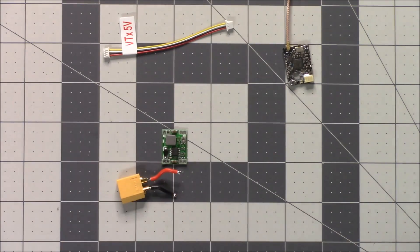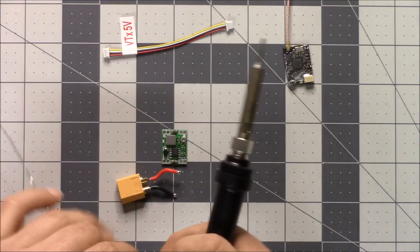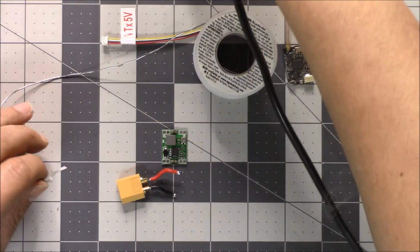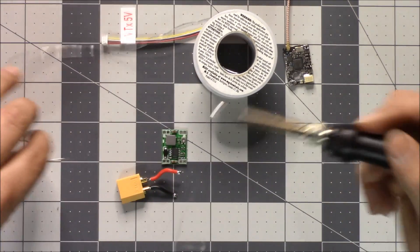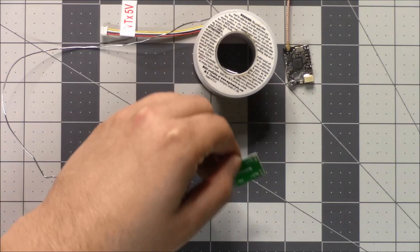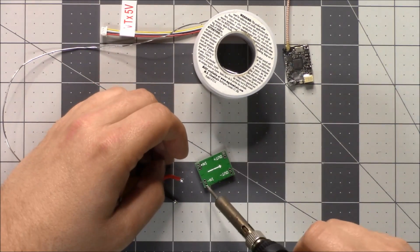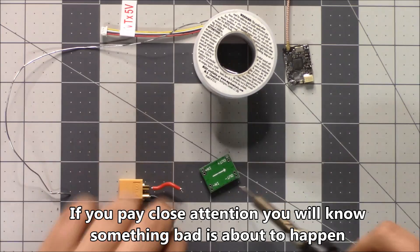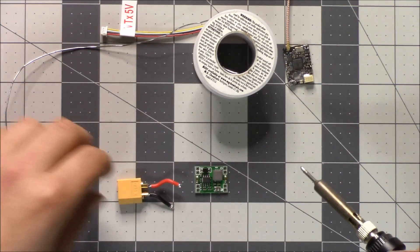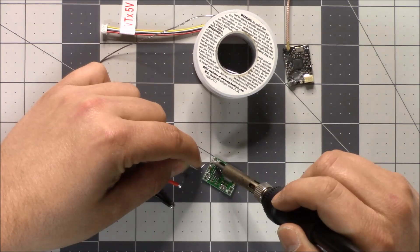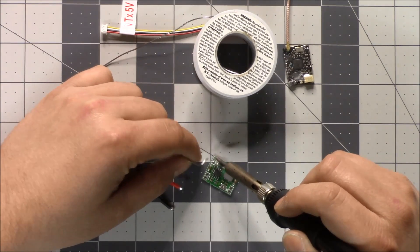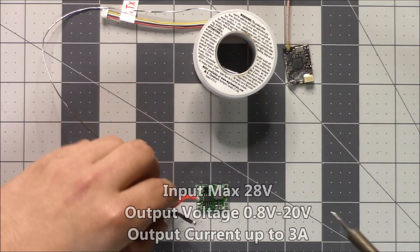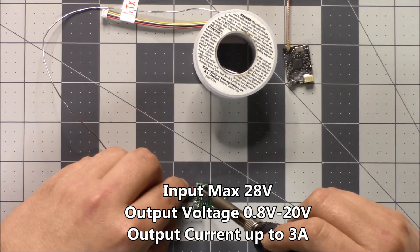I'm going to solder on an XT60 connector here so that I can connect it to one of my batteries. This is where the voltage is going to come from and then this is where our five volts is going to come out. This regulator is capable of inputs up to like 28 volts and can output anywhere as low as three volts. Buck regulators are extremely efficient because they just switch on and off and they're not burning off energy as heat like linear regulators.